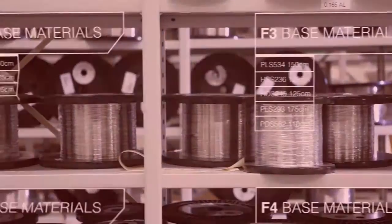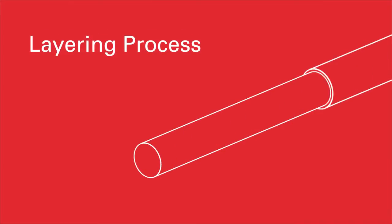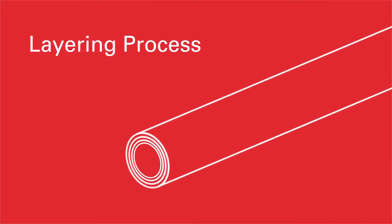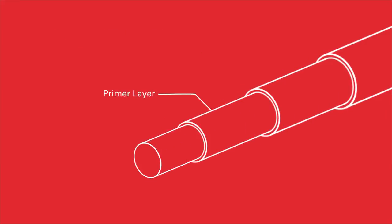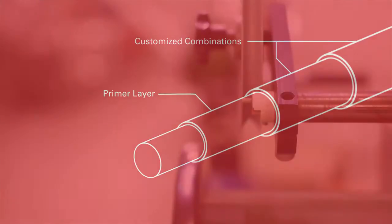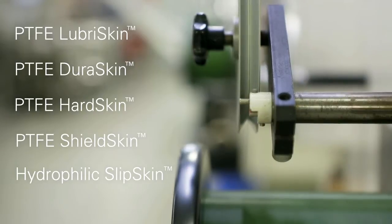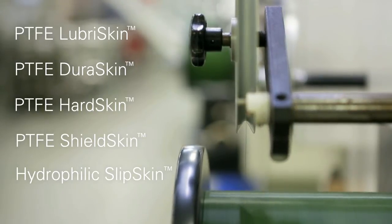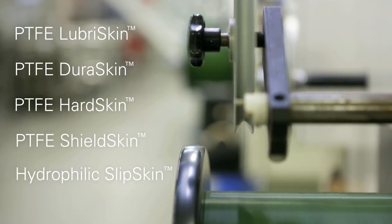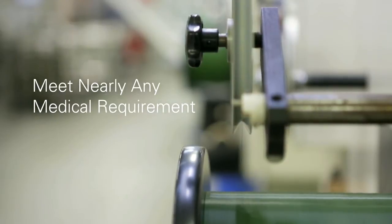At Merit, we also use a unique layering process to apply our coatings. This includes a primer layer followed by customized combinations of smooth, hard, tough, and flexible topcoat layers. This approach gives us the ability to meet nearly any medical requirements.